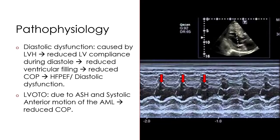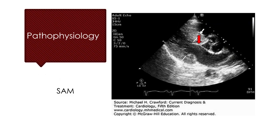Of note that normally in systole the anterior mitral leaflet should be in opposition to the posterior mitral leaflet to close the mitral valve. This is another illustration to demonstrate the systolic anterior motion of the anterior mitral leaflet obstructing the left ventricular outflow tract.